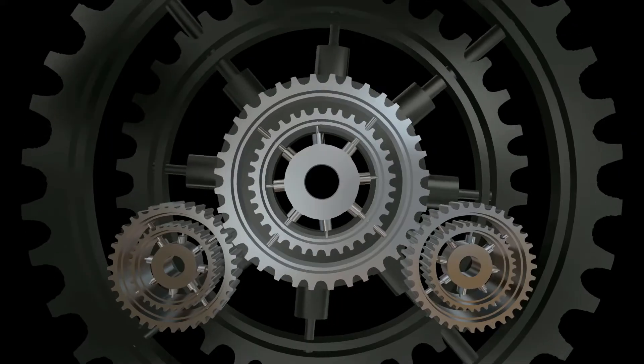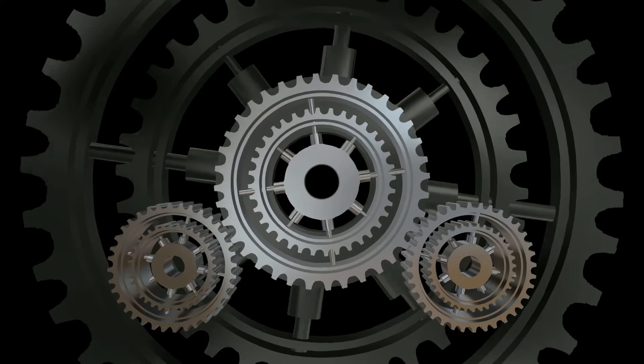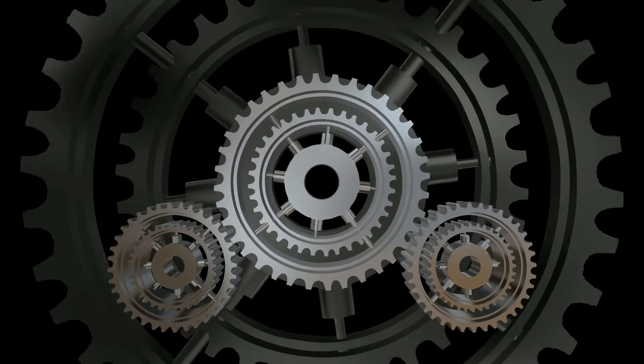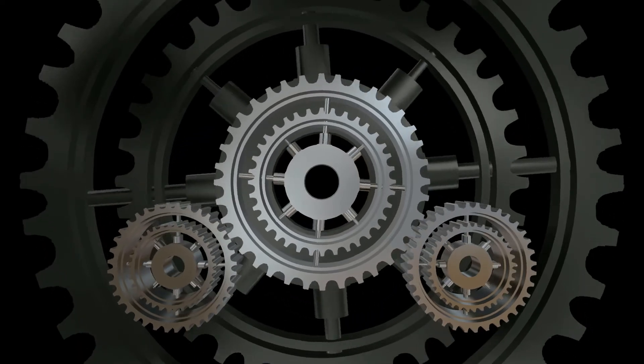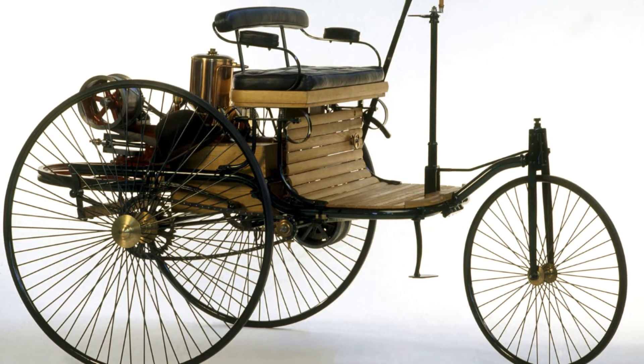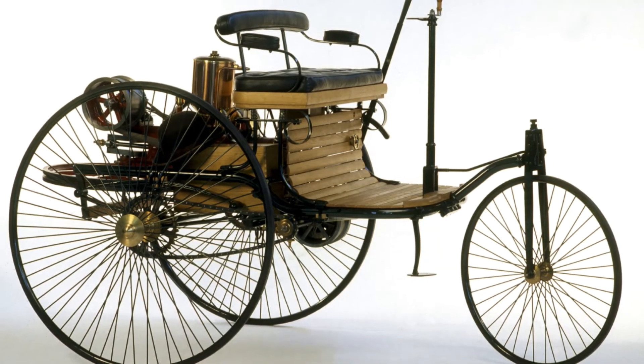He built all the parts of the automobile himself, including the spark plugs, carburetor, gear, clutch, ignition, and water radiator. The first automobile to be produced by Karl Benz was a three-wheel vehicle called Motor Wagon. The combustion engine depended on hydrocarbons to start.